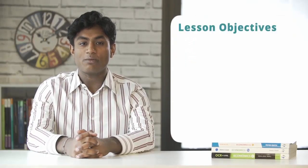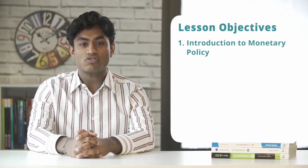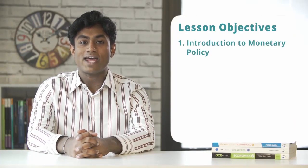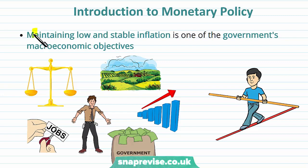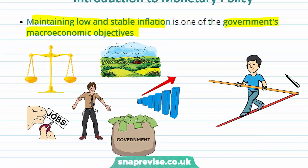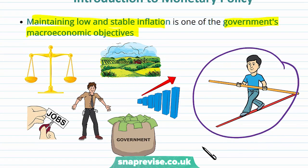In this video we'll be looking at an introduction to monetary policy and then we'll be finishing off with a summary. Maintaining a low and stable inflation is one of the government's macroeconomic objectives. In previous videos we have discussed the costs and benefits of inflation, and therefore we can evaluate why we would specifically want to have a stable inflation rate. There are six other macroeconomic objectives that we are going to care about.